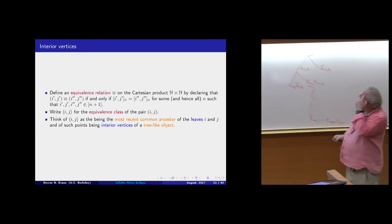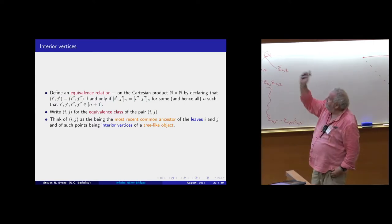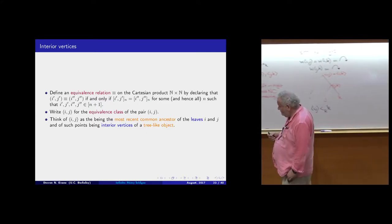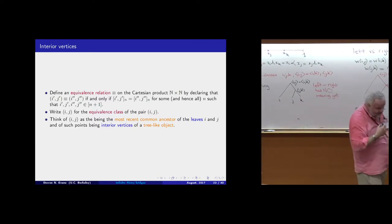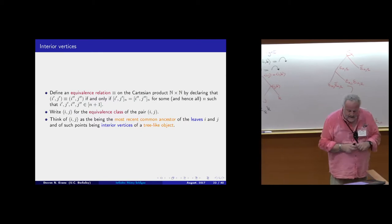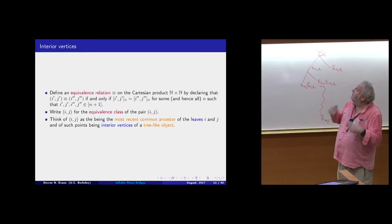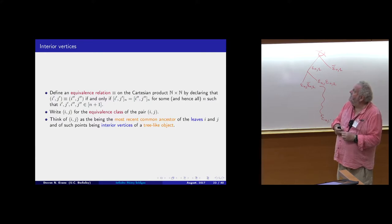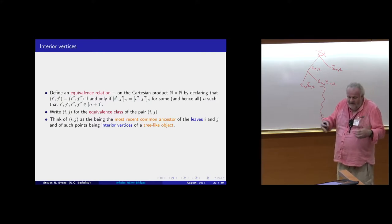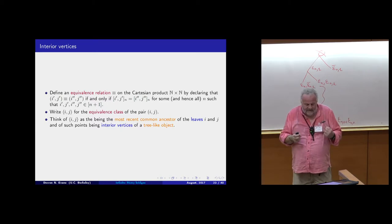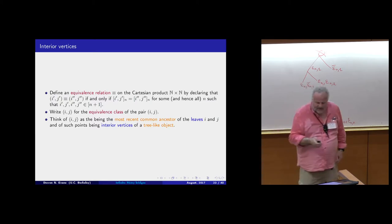This gives us an equivalence relation on pairs of indices: a pair (i,j) is equivalent to a pair (k,l) if at some stage they share the same most recent common ancestor, a relationship maintained forever after. We introduce the notation ⟨i,j⟩ for the equivalence class containing the pair (i,j), and think of ⟨i,j⟩ as the most recent common ancestor of leaves i and j — some kind of interior vertex in an infinite tree-like object.